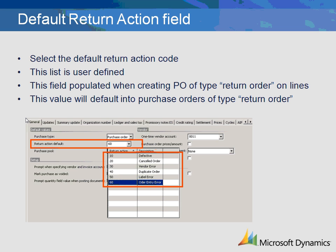The Default Return Action is a field that exists when creating a purchase order of the type Return. The return order is placed when you are sending goods back to the vendor. This user-defined code is a means of explaining why the goods were returned. This field will be entered for each of the lines you are creating on your return purchase order. Since this is a default, you can leave it blank and let the user define the exact reason for the return when creating the return purchase order lines.